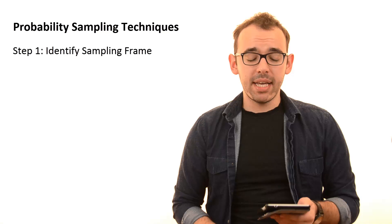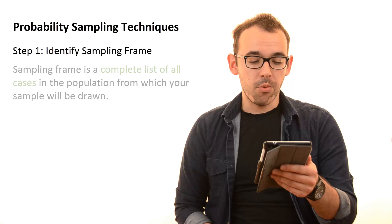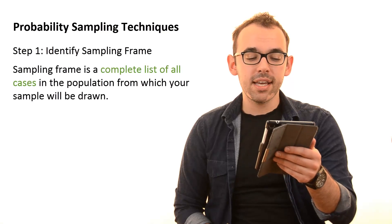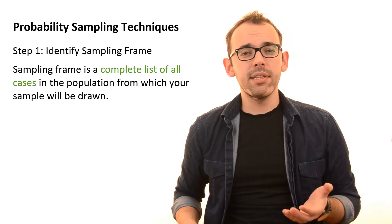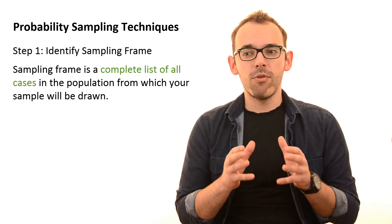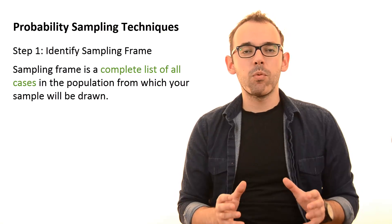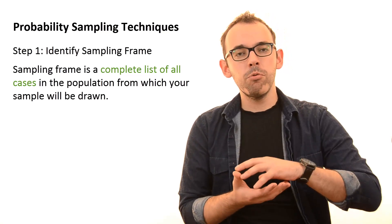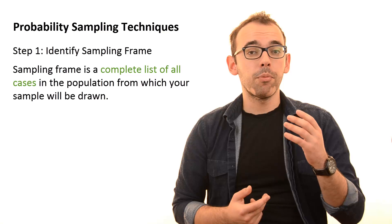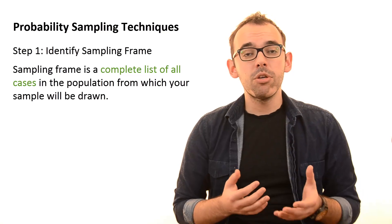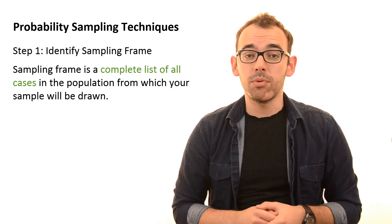The first step is about identifying our sampling frame. What is a sampling frame? Well, this is a complete list of all cases in the population from which your sample will be drawn. So let's say that we are writing research about the opinions of students at our university on accommodation. Your sampling frame will simply be the full list of students that are at the university, meaning that if you would like to go for probability sampling techniques, you need to be able to obtain this full list.